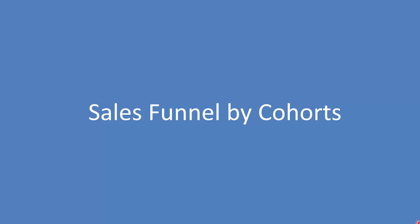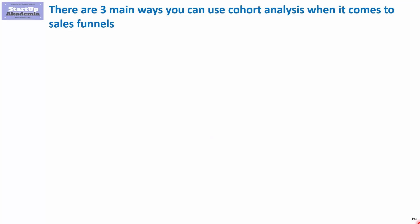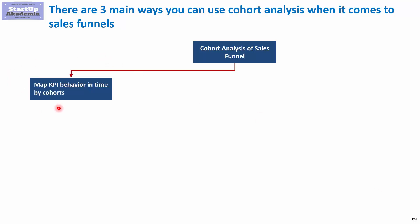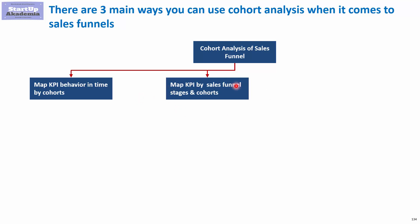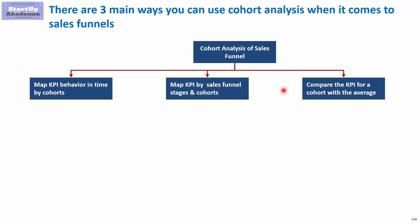Let's see how we can analyze the sales funnel by cohorts. There are three main approaches in which you can use cohort analysis. The first way we discussed in the previous lecture is mapping the KPI behavior in time by cohorts. The second approach, which we'll discuss in this lecture, is about mapping the KPI by stages of the sales funnel and cohorts. And finally, we can compare a specific KPI for a cohort with the average for the whole population.